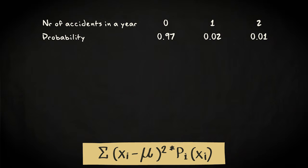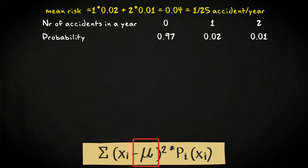This discrete distribution gives the yearly risk that you would get involved in a traffic accident. The mean risk is 0.04, once in 25 years.